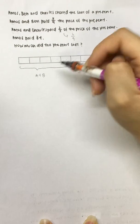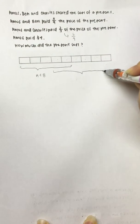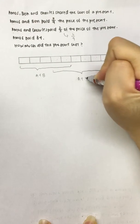So 1, 2, 3, 4, 5, 6. 6/9 units will be paid by Amos and Charles.